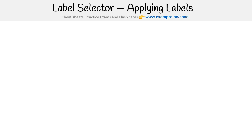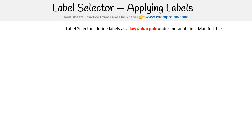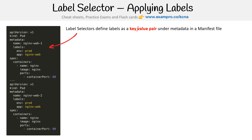Let's take a look at what we do when we apply labels. Label selectors define labels as key-value pairs, under metadata in the manifest file. Notice here it says metadata, and then there is our label — this is the key, this is the value. As you can see, we can have multiple labels.